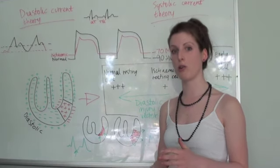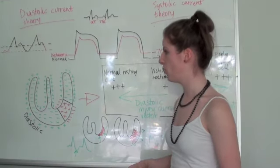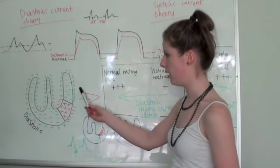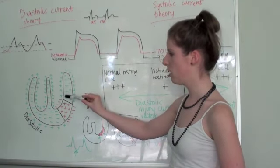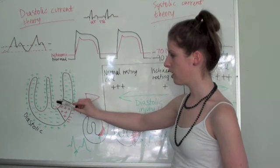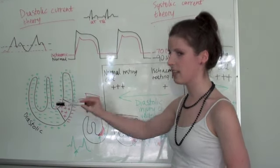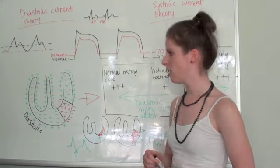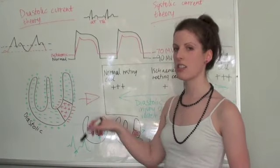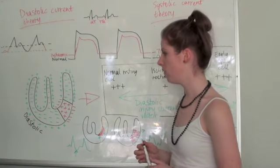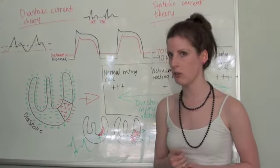Now of course it isn't depolarized completely, so the rest of the healthy myocardium is still more positive compared to the ischemic area. Remember, it's all to do with the outside of the cell and the voltages outside the cell.